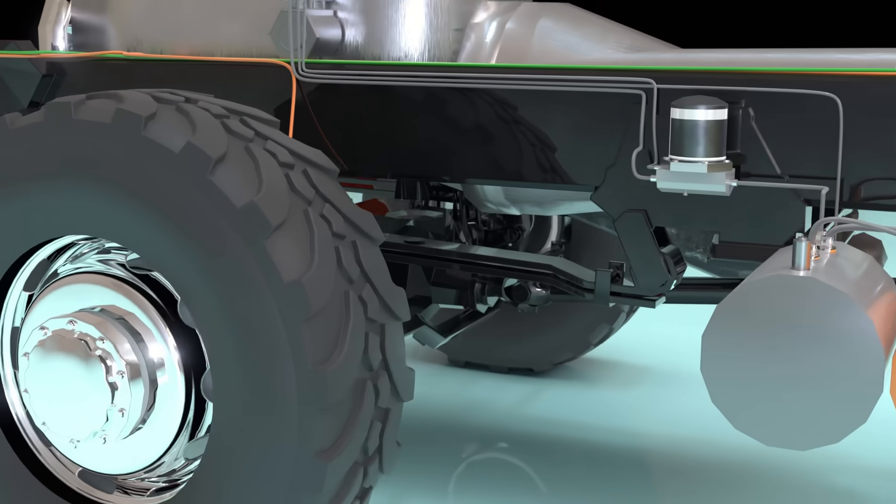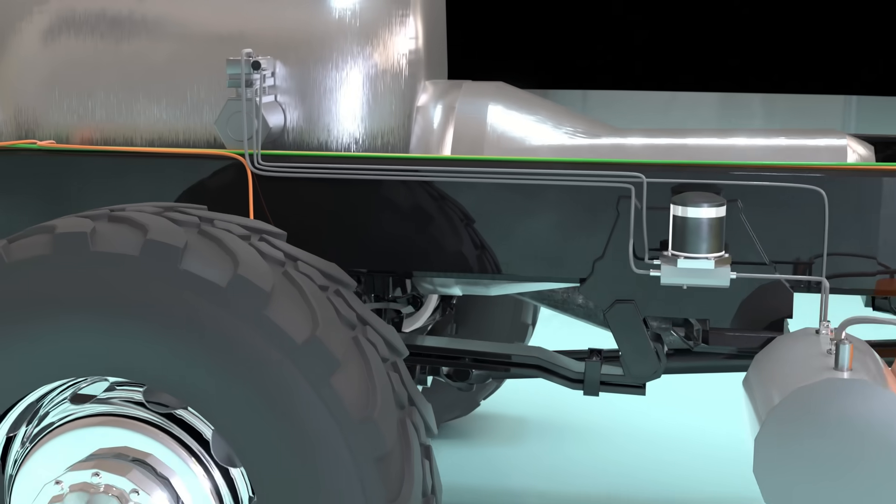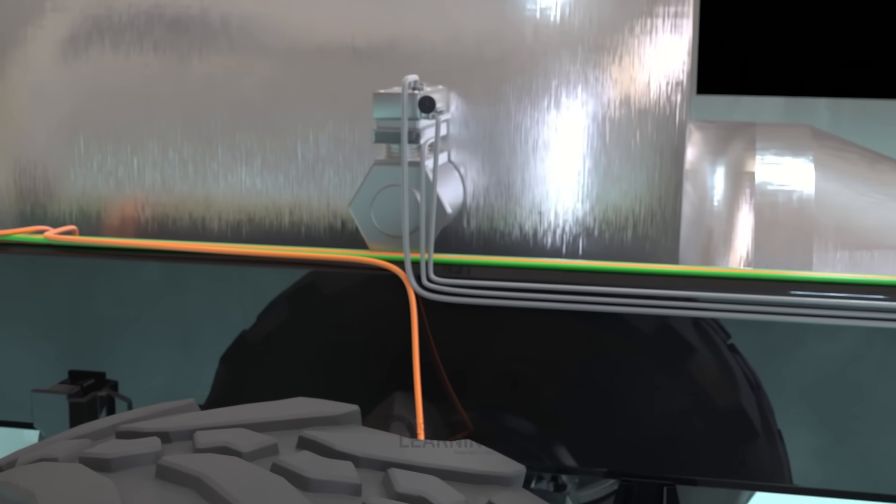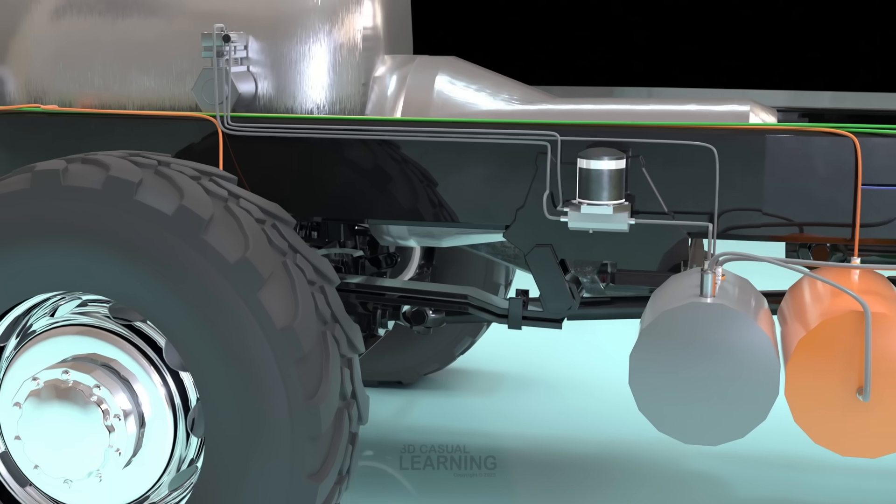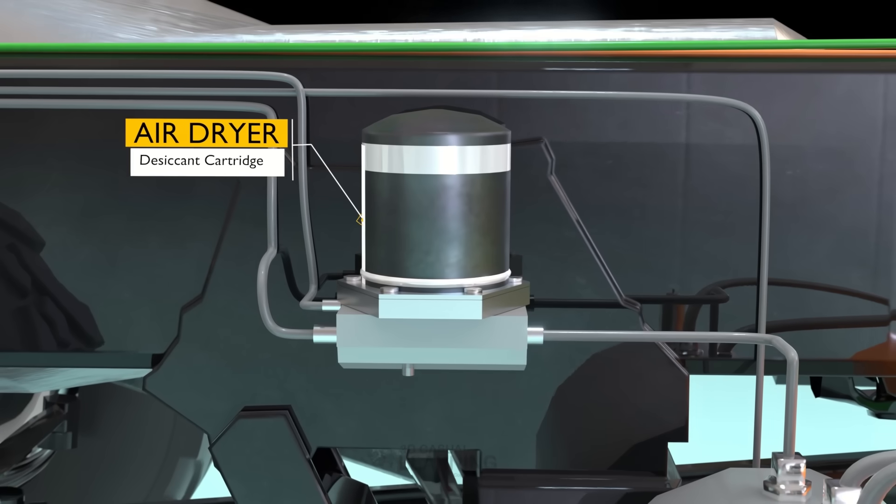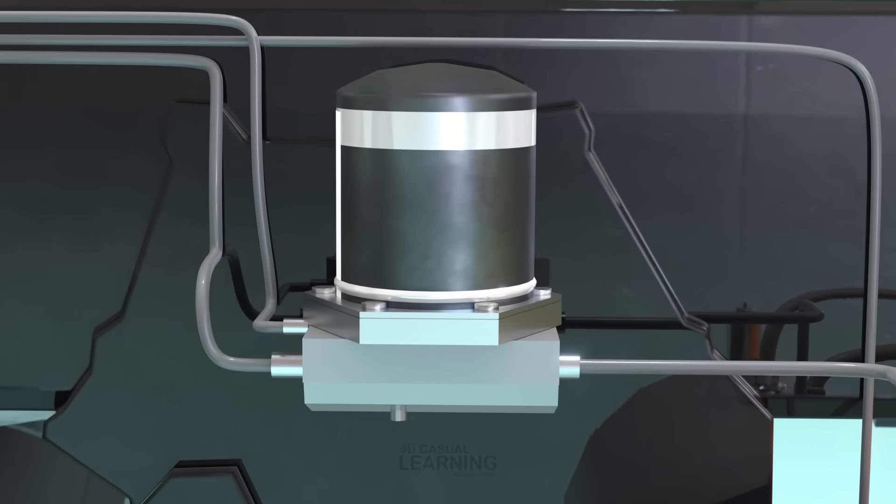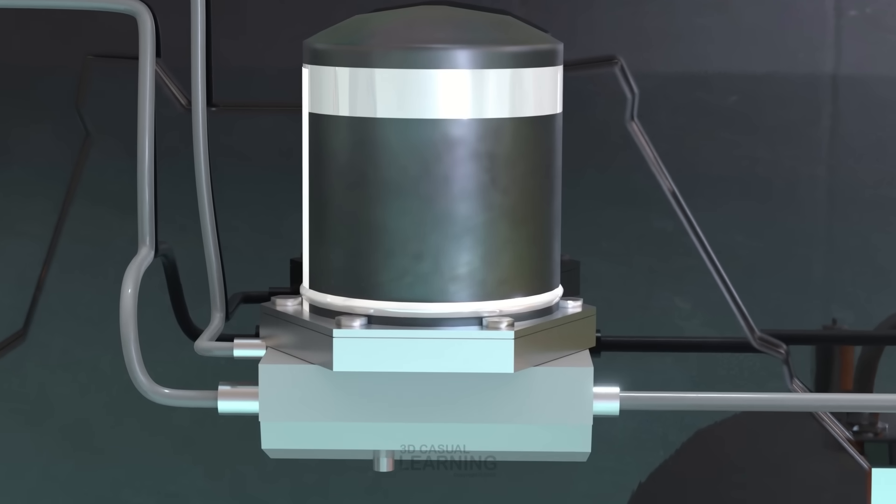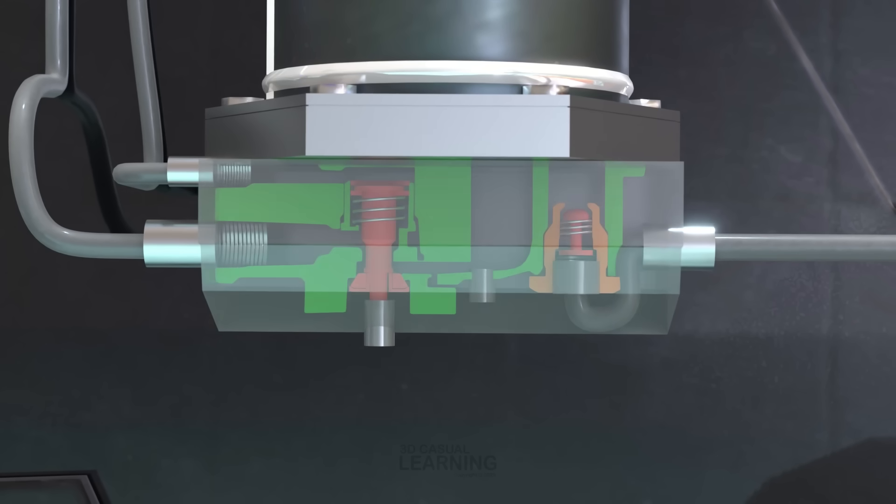The air produced by a vehicle's compressor is 100% saturated with water vapor. When temperatures drop, this vapor condenses into liquid water, which can damage components and affect brake performance. To address this issue, a desiccant air dryer is installed between the compressor and the supply reservoir. Its job is to remove 100% of solid and liquid contaminants, and approximately 95% of the water vapor, before the air enters the brake system.